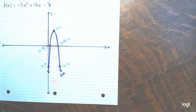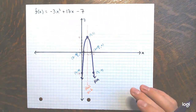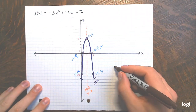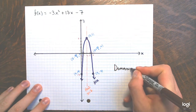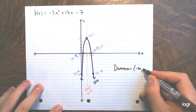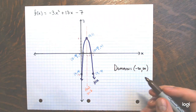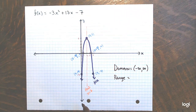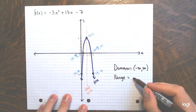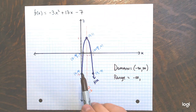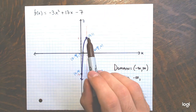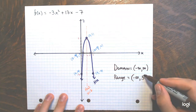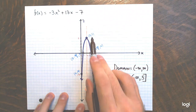Domain for any quadratic is all real numbers. For the range: the parabola opens down with vertex at (2, 5), so the highest y-value is 5 and there's no lower bound. Range is the interval from negative infinity to 5, with a bracket on 5 because it is actually achieved as the y-coordinate of the vertex.